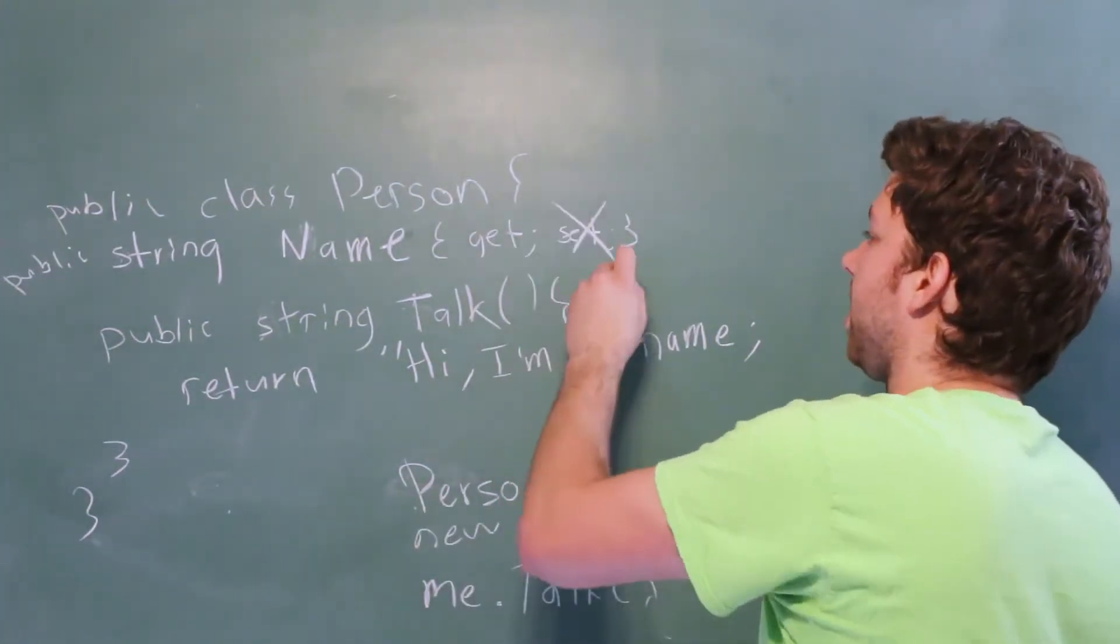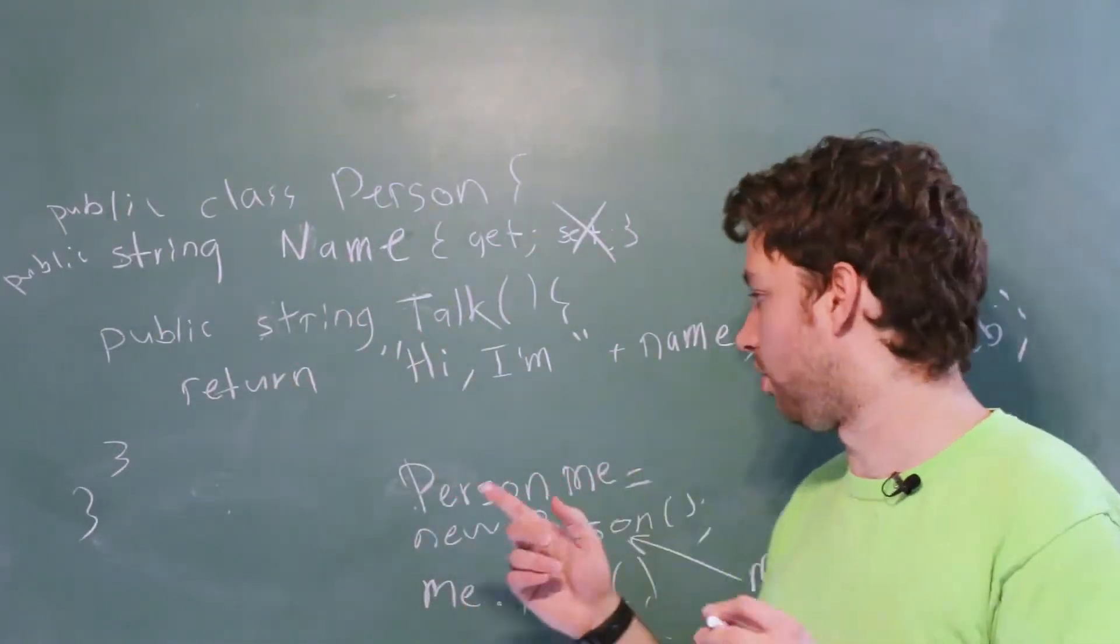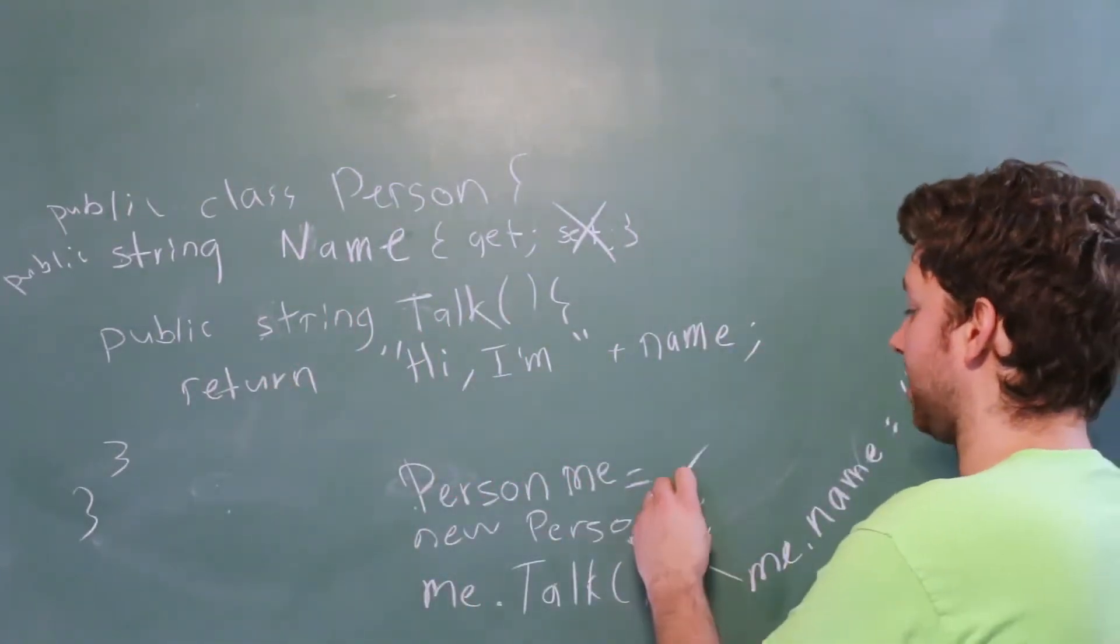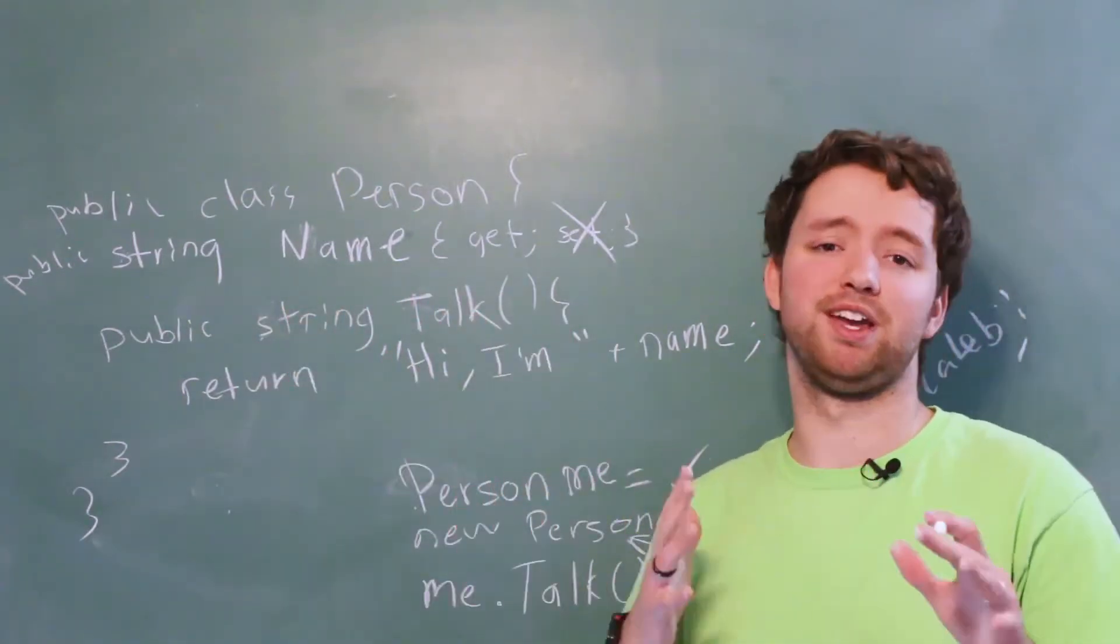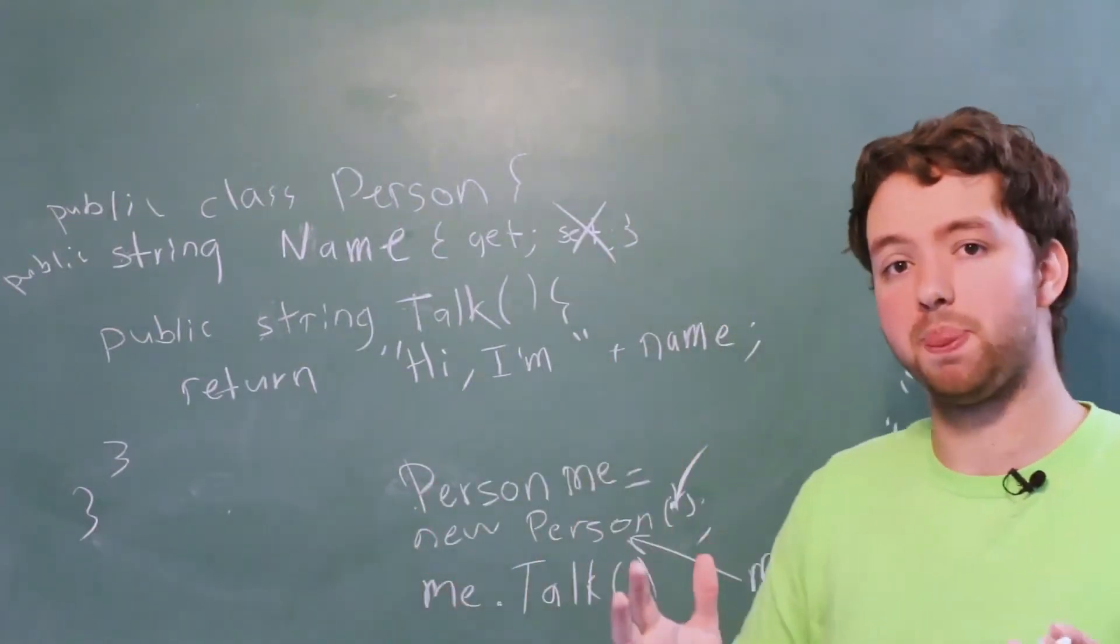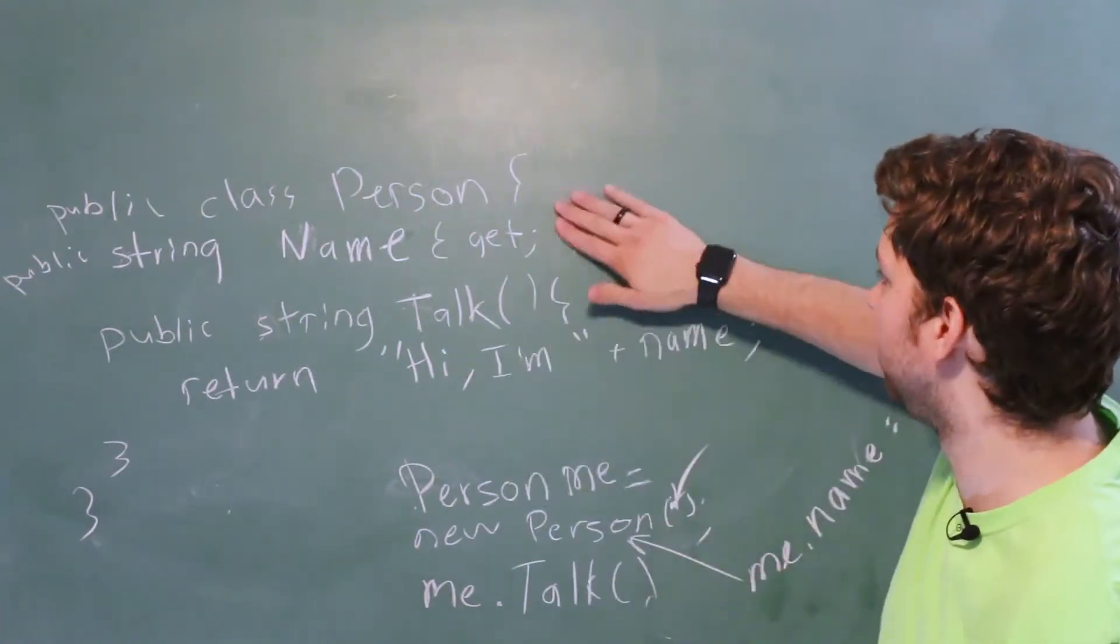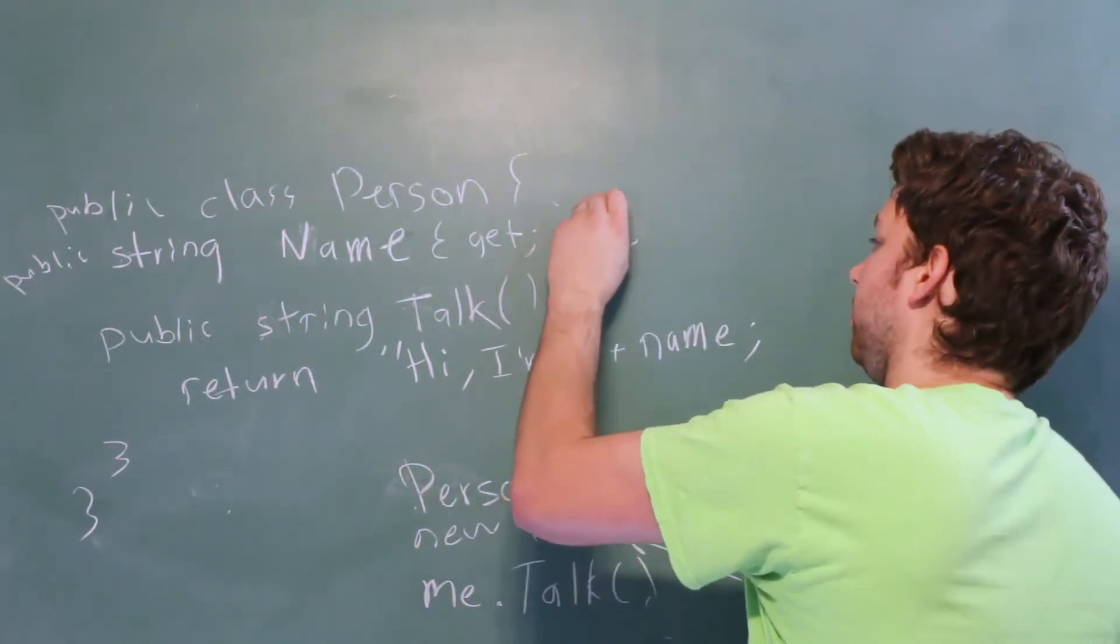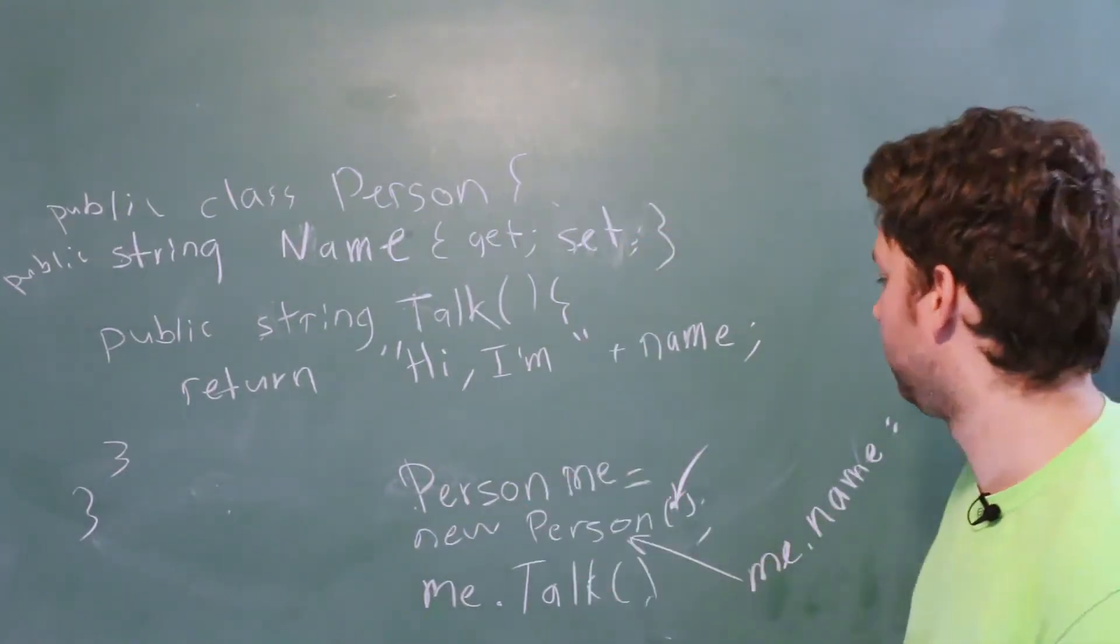Alternatively, you could just get rid of this set here and only make it settable through a constructor call such as this right here. We can pass in a value to that, assign the value to name, and we're getting a little bit off topic. We're getting into constructors, which we'll get into later on. So stay focused and we'll get to that soon. But the best thing to probably do here is just to make this a property like so. Beautiful.